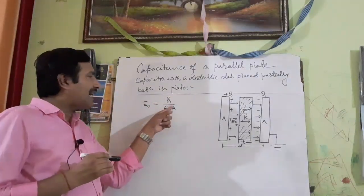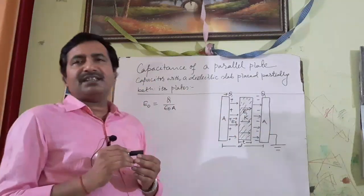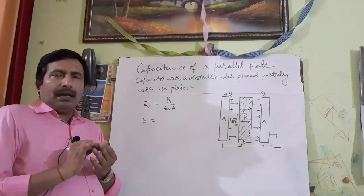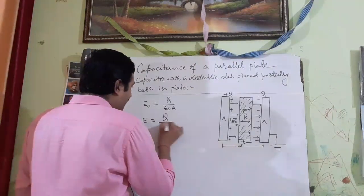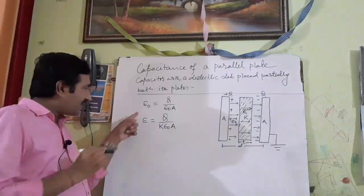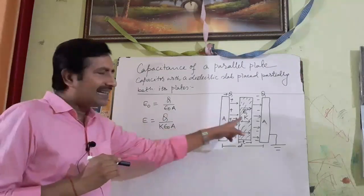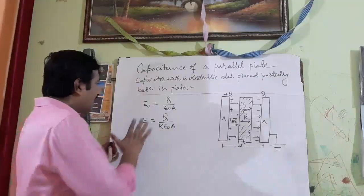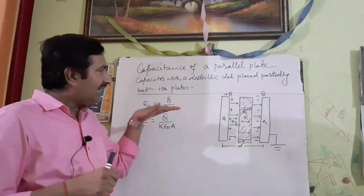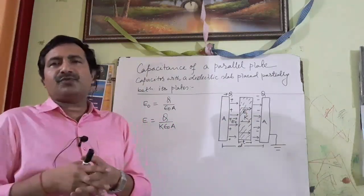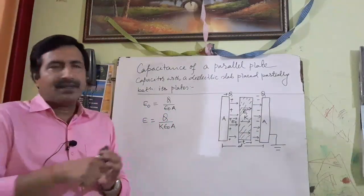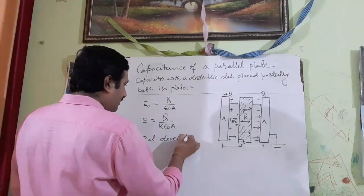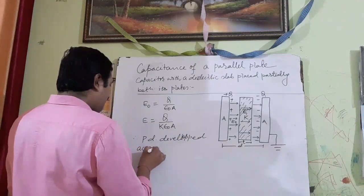You already learnt in the previous lecture why the electric field is Q by ε₀A. The electric field inside the dielectric slab has been reduced in comparison to the external electric field — the electric field in the free space. After that, you have to find the potential difference. Whenever an electric field exists in space, whether uniform or non-uniform, the potential difference decreases in the direction of the field.